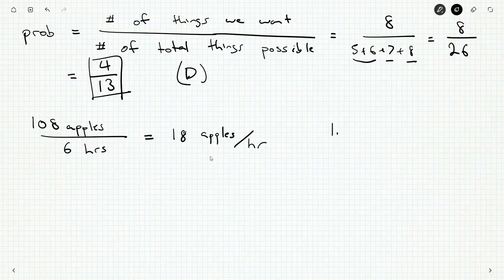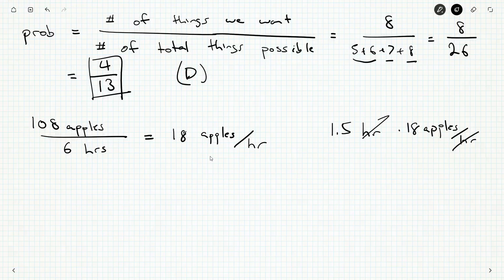And now we do an hour and a half. One hour and 30 minutes is an hour and a half. So one and a half hours times this constant rate, and the hours will cancel out. One and a half times 18. Well, half of 18 is nine, so one 18 plus a half of 18 is 18 plus nine, or 27 apples.